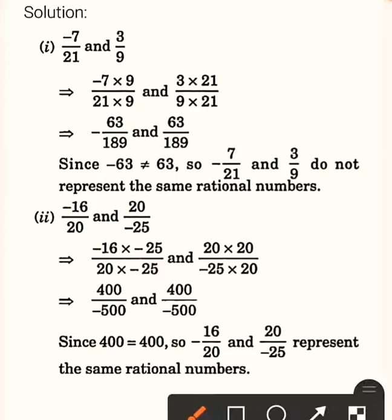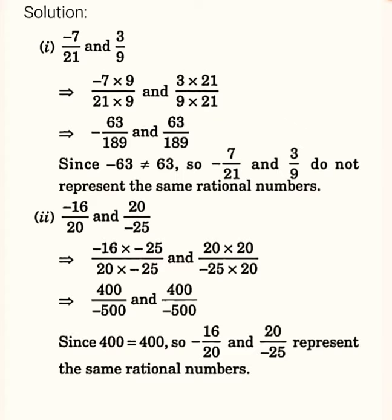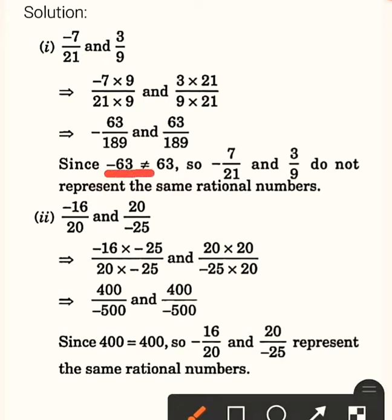After multiplication: 7 nines are 63, so the first part gives minus 63 upon 189. And 3 into 21 gives 63, so the second part gives plus 63 upon 189. Comparing: minus 63 and plus 63 are not equal — one is negative and the other is positive. Therefore, minus 7 upon 21 and 3 upon 9 do not represent the same rational numbers.